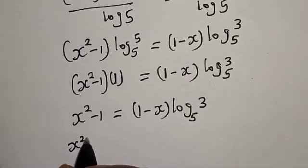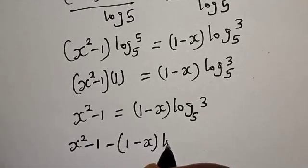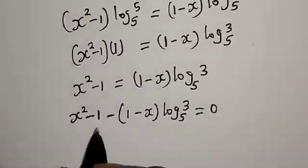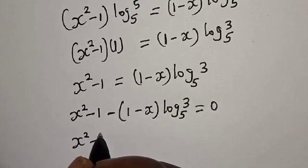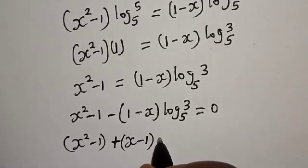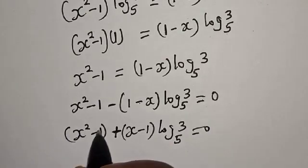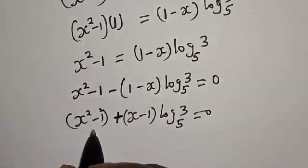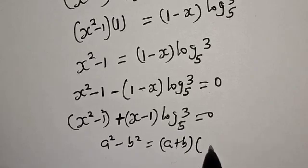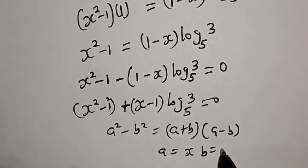We have s squared minus 1 minus (1 minus s) log 3 base 5 is equal to 0. Then this is s squared minus 1 plus s minus 1 times log 3 base 5 is equal to 0. Now s squared minus 1 is a difference of two squares. We have a squared minus b squared equals a plus b times a minus b, where a equals s and b equals 1.